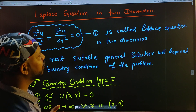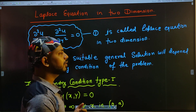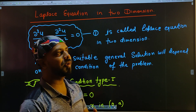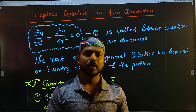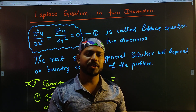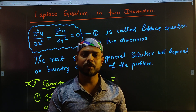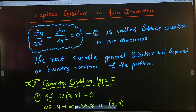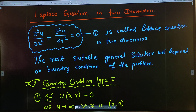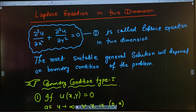I will tell you about two dimensions. If you ask one dimension, then you can solve it. The equation is: ∂²u/∂x² + ∂²u/∂y² = 0.